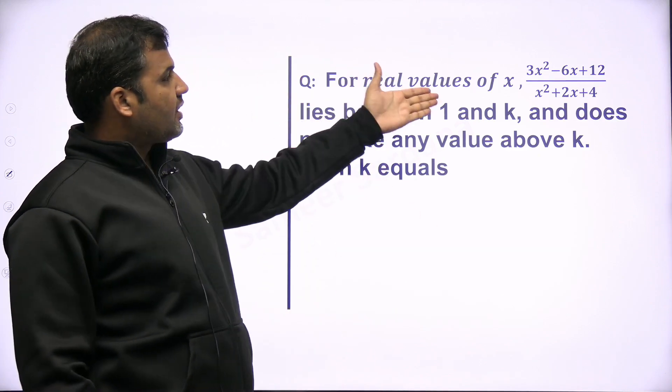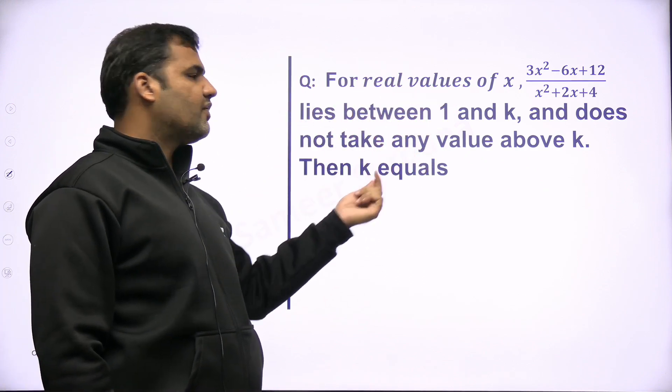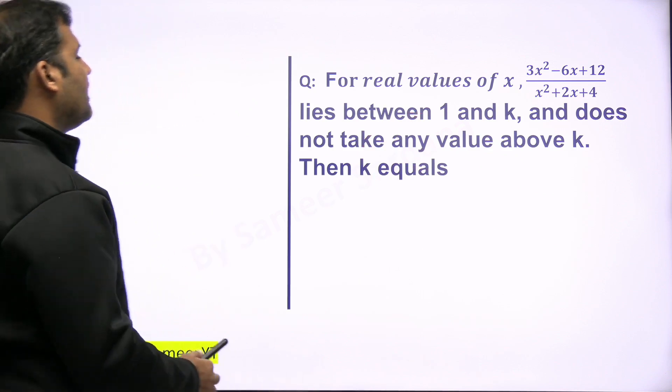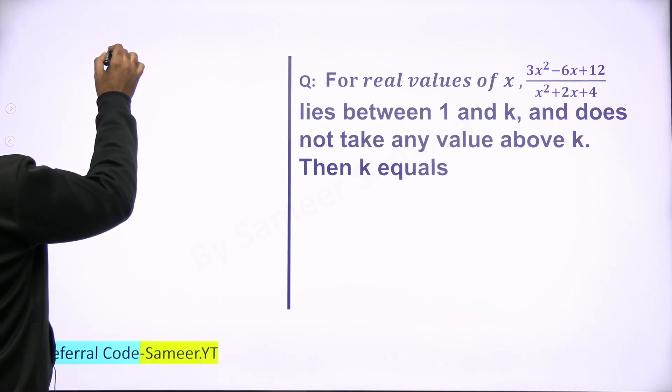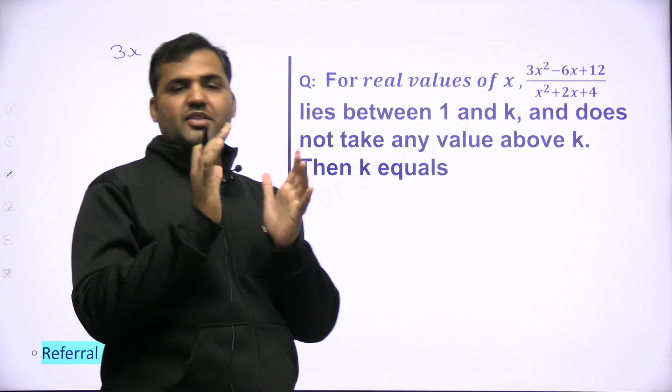So we have for real values of x, this expression lies between 1 and k and does not take any value above k. Then k equals what? Because what I am going to take is this whole expression. So what is the right way to approach this? Let's understand this.